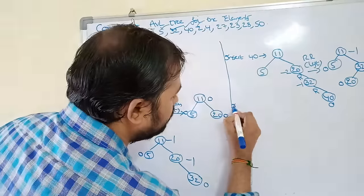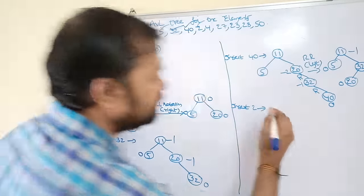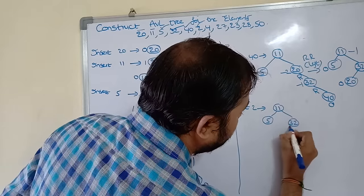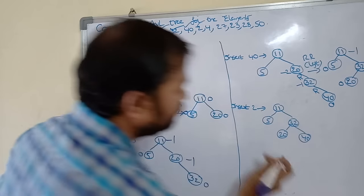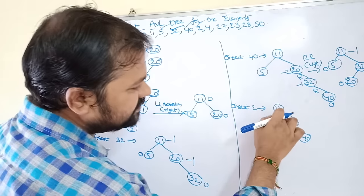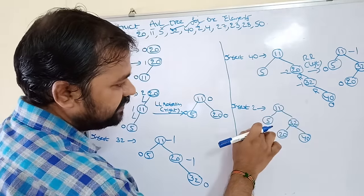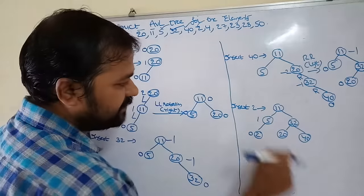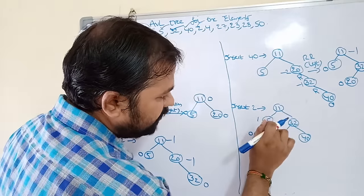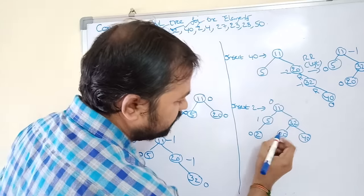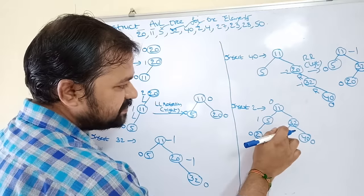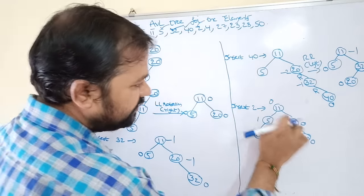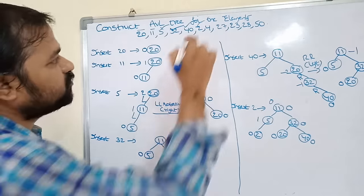Next insert 2. The tree is: root 11, left subtree with root 4 (wait, the left child is 5), right subtree 32 with children 20 and 40. 2 is less than 11, go left. 2 is less than 5, go left. Calculate balance factors: for 2 it is 0; for 5 it is 1 minus 0 = 1; for 11 the left subtree height is 2 and right subtree height is 2, so 2 minus 2 = 0. All balance factors are within range. No rotation is needed.